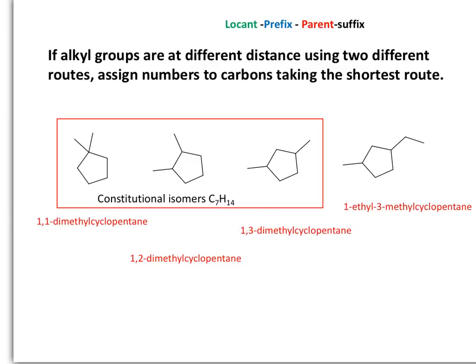When we assign the numbers, we need to label this cycloalkane. This is going to be carbon number one, and this is going to be carbon number two. My second option is to say this is carbon number one and this is carbon number two — it doesn't matter which one I pick as long as I pick the shortest route to assign the number. For the second isomer, there is only one right answer: this is carbon one, two, and three. If I select a different route, that would be wrong.